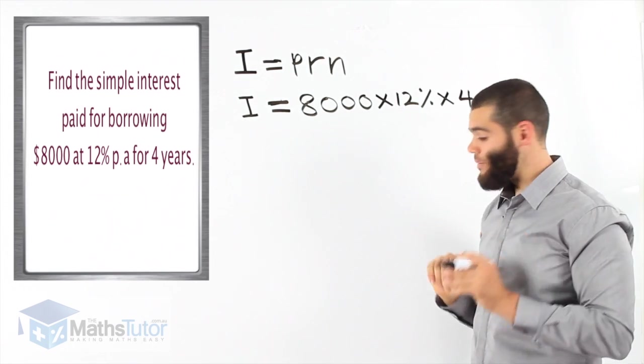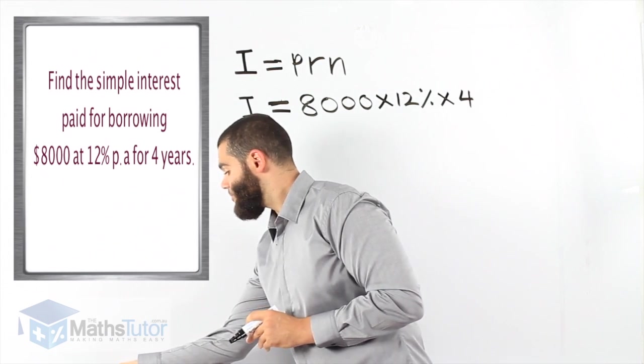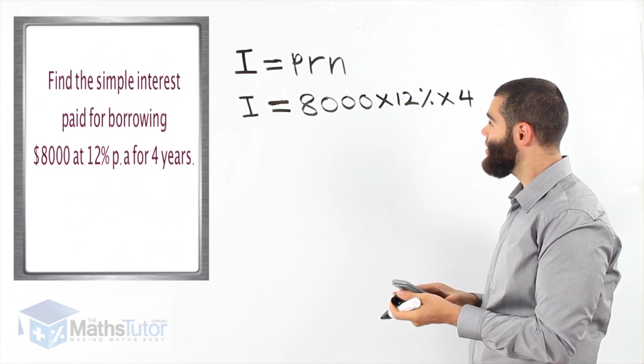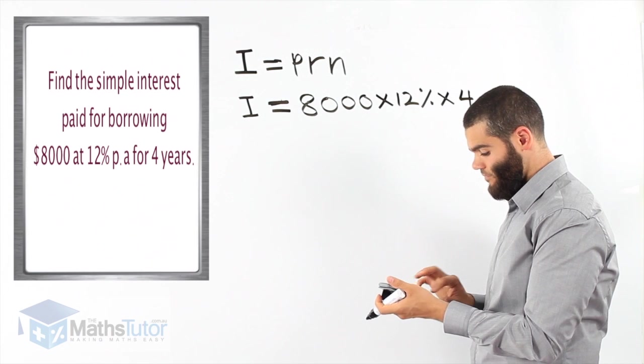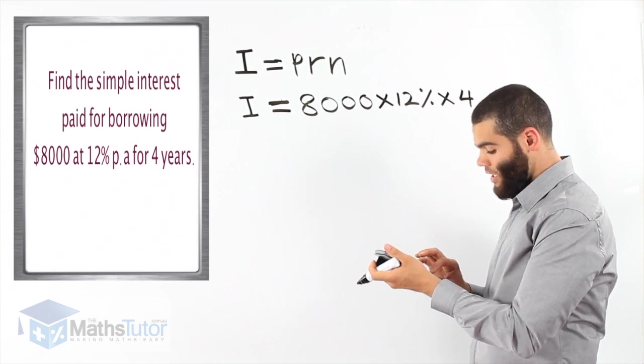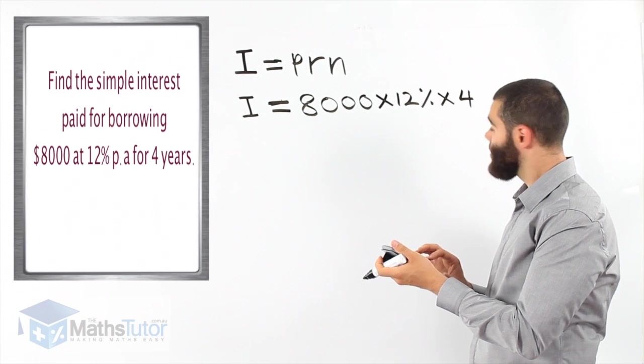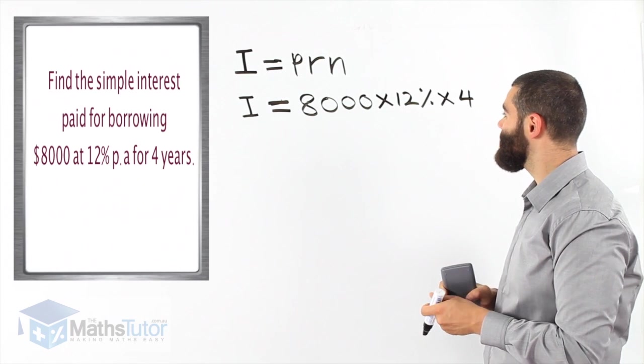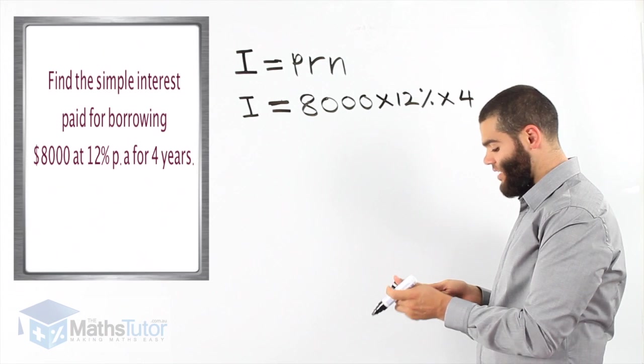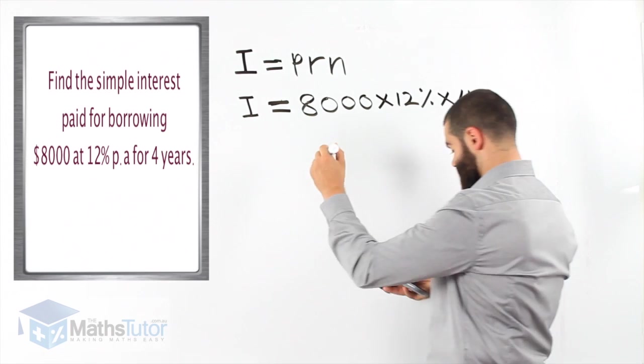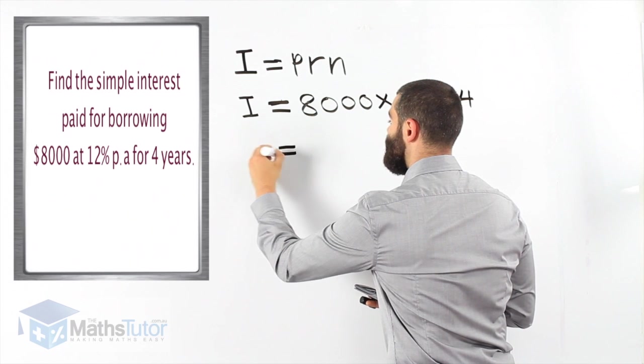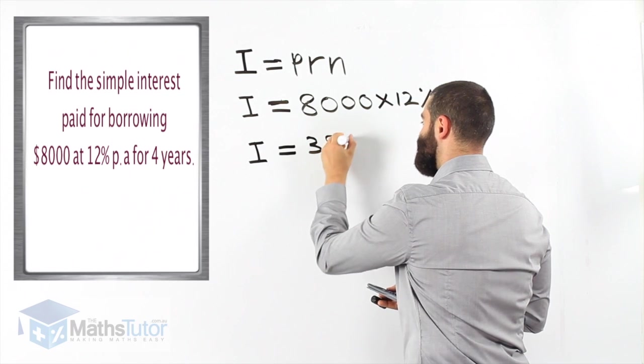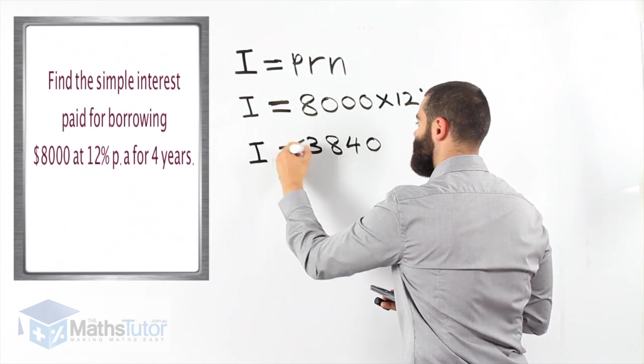Let's grab our calculator. Let's do it. Always have your calculator handy. 8,000 times 12% times four. It's that simple. So, 8,000 times 12% times four. 3,840 dollars.